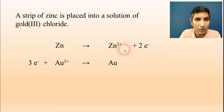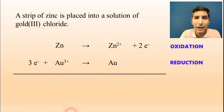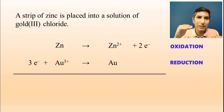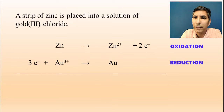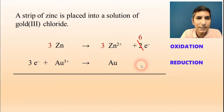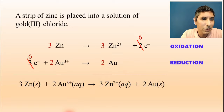The zinc's oxidation is the first half reaction; gold being reduced from +3 to 0 is the second. But we have a problem — two electrons versus three electrons won't cancel. So I multiply the first half reaction by three and the second half reaction by two. Now we have six electrons on both sides, and those cancel out when added together.